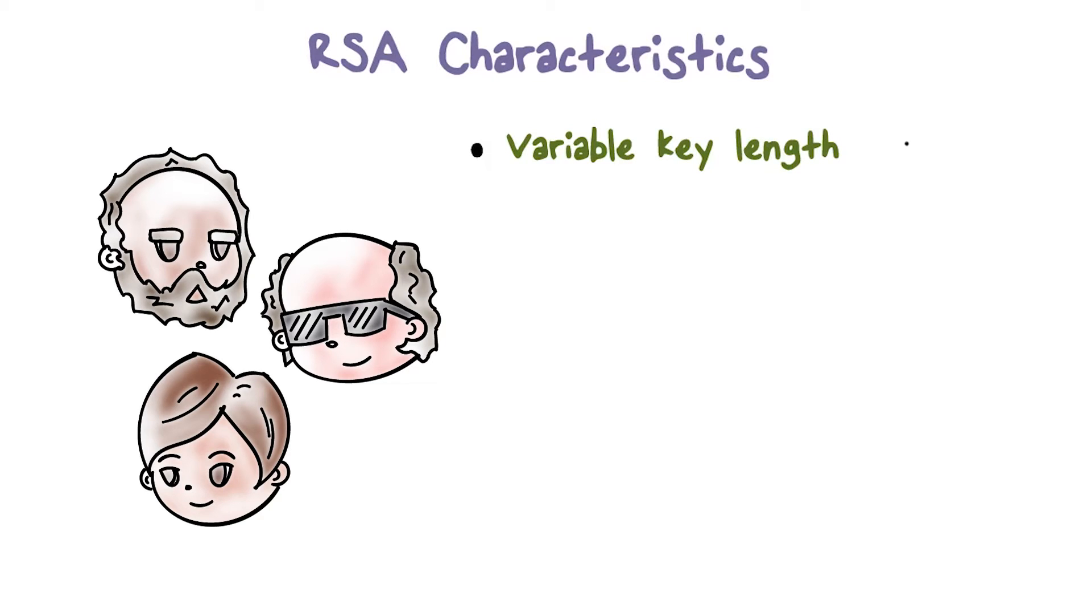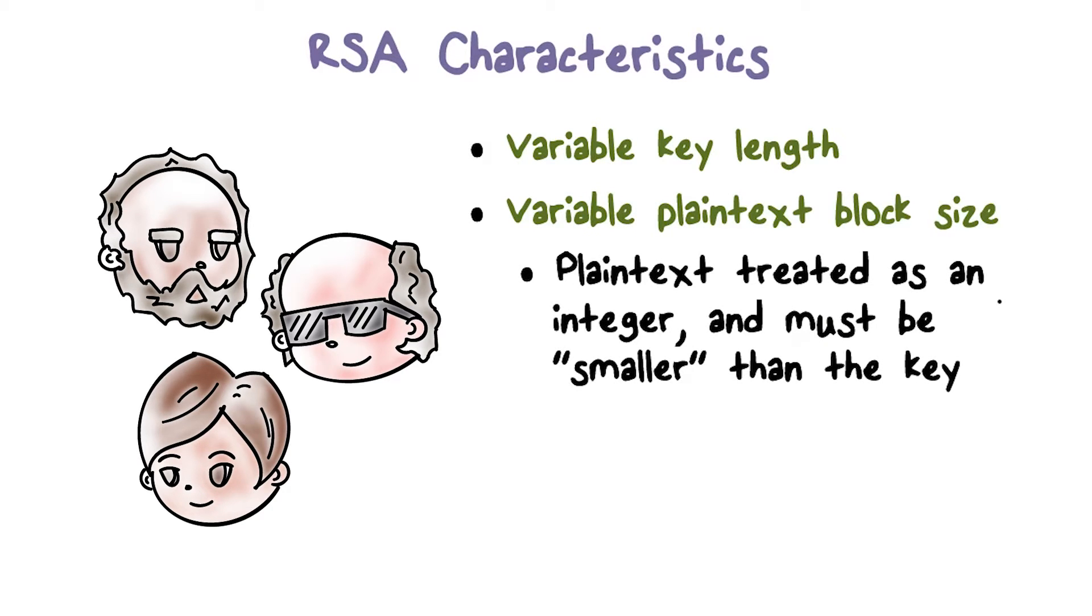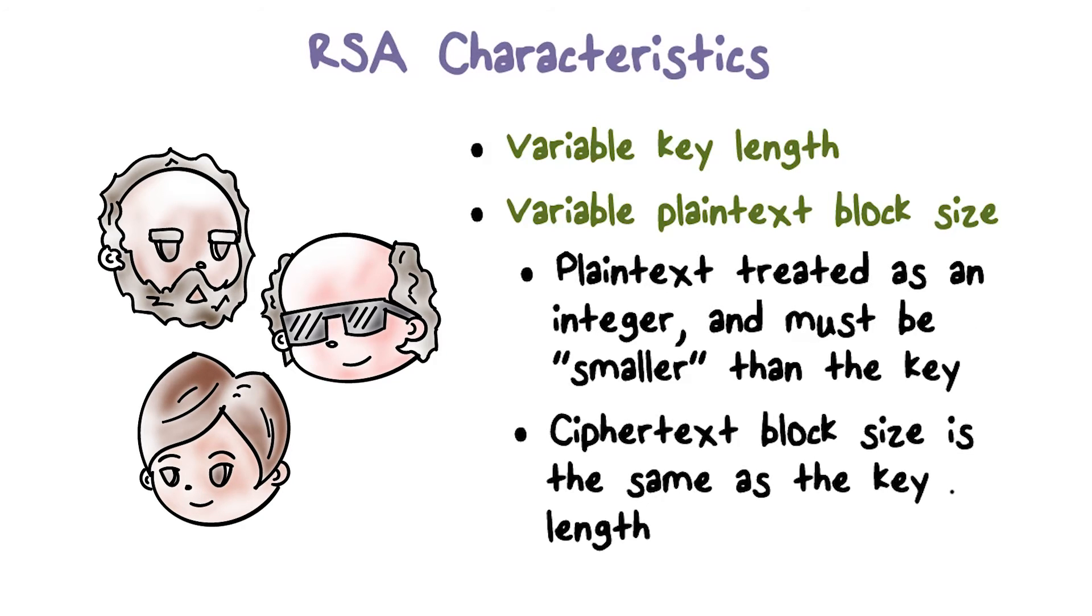RSA can support variable key lengths. In practice, most people use a key length of 1024 bits, or 2048 bits, or even 4096 bits. The plaintext length can also be variable. In RSA, every data is treated as an integer because we can interpret any data with bits of 1 and 0 as an integer. The requirement here is that the plaintext input has to be smaller in integer value than the key. The size of ciphertext is the same as the key length.